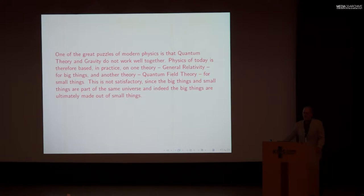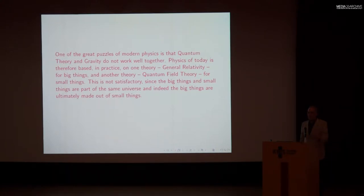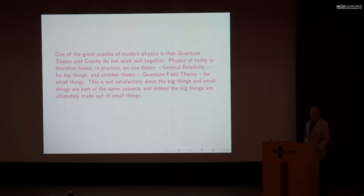The Sun, for example, is built out of many atoms and subatomic particles, so it doesn't make sense to have one theory that applies to an atom, and then another atom, and then a third atom, but when you get to a very large collection of atoms you say forget all that and start over with a different theory. Somehow there should be one theory that describes both the little things and the big things that are ultimately made out of little things.